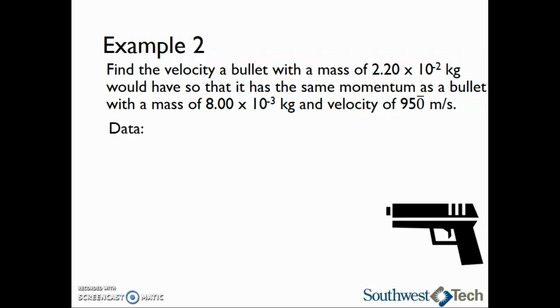First, we know that the first bullet has a mass of 2.20 times 10 to the minus 2 kilograms. We are trying to find the velocity v sub 1 of this bullet. We also do not know what momentum this bullet has, p sub 1. We know the mass of the second bullet, m sub 2, is 8.00 times 10 to the minus 3 kilograms. Its velocity, v sub 2, is 950 meters per second. We do not know the momentum, p sub 2, of this bullet.